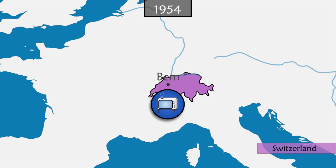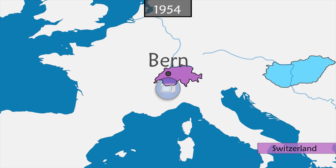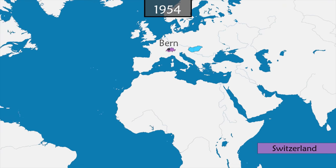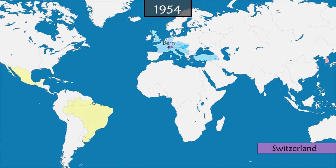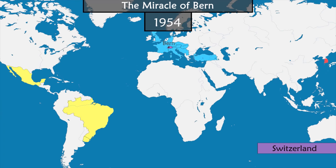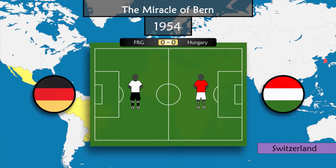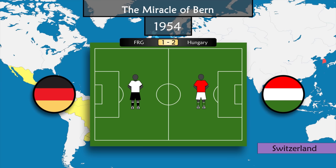Four years later, Switzerland hosts the competition — the first to be broadcast on television. Hungary, undefeated for 31 games, is the favorite. However, to everyone's surprise, West Germany narrowly wins the final thanks to a goal scored in the final minutes of the game.